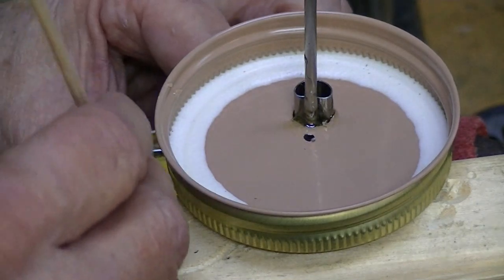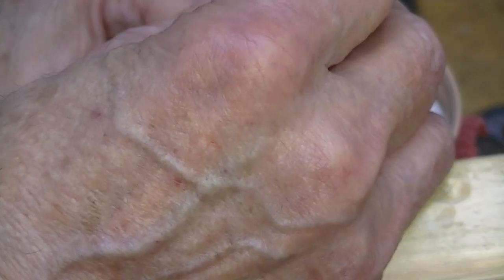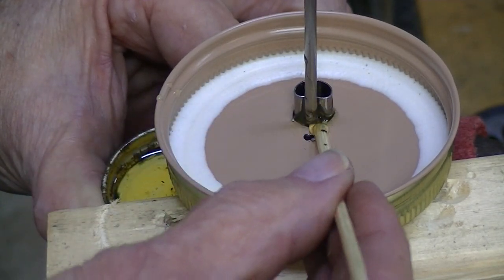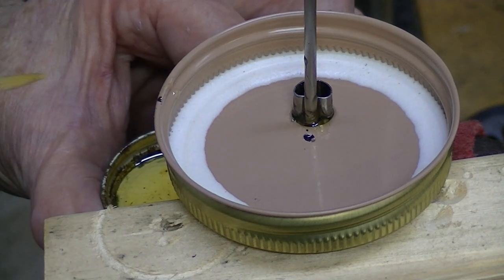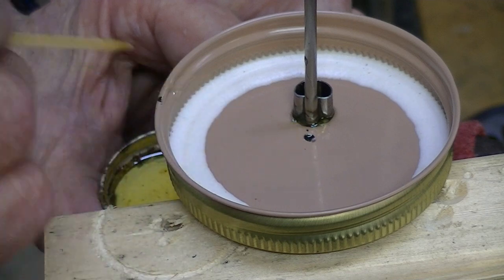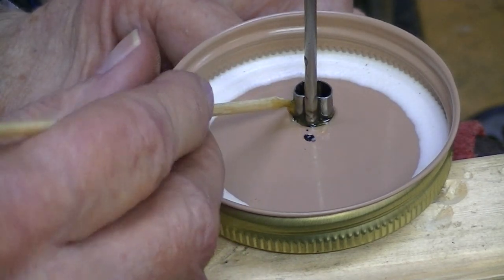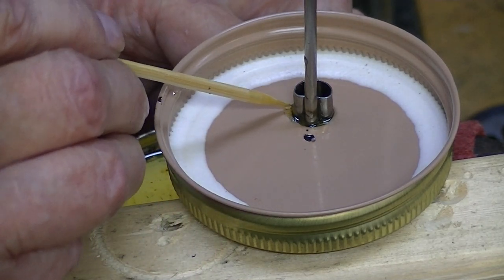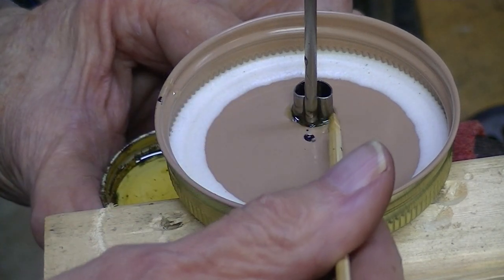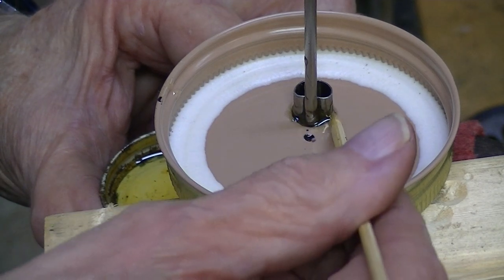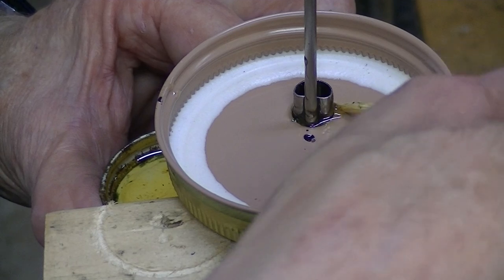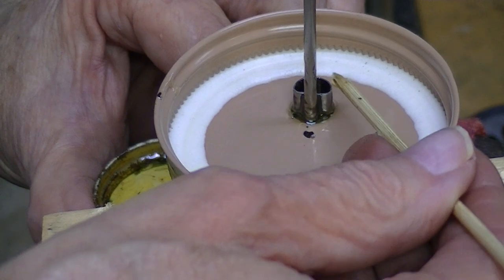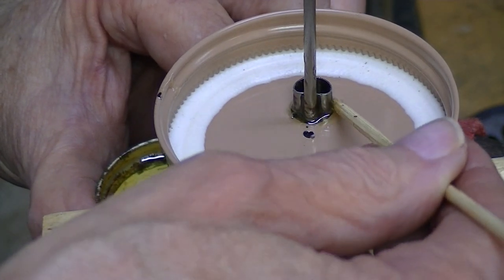I'm going to keep adding epoxy, half a drop or so at a time, until it starts coming out the holes, the small holes. They're vent holes. So I've got epoxy at this near vent hole right now. I'm going to put some of it around the spout.